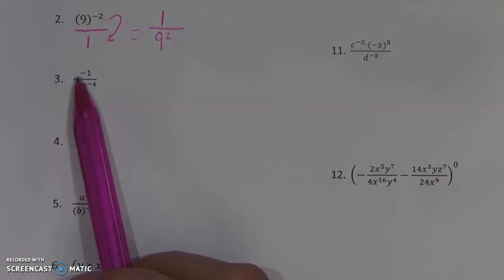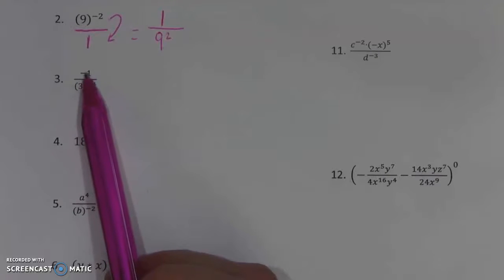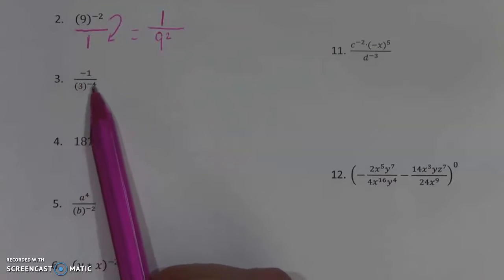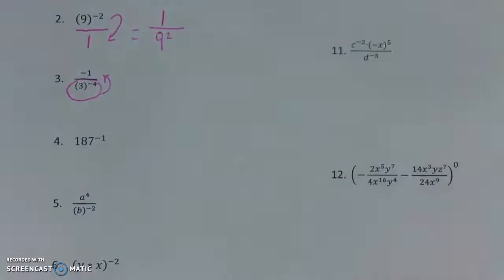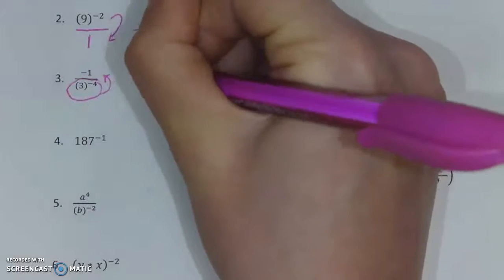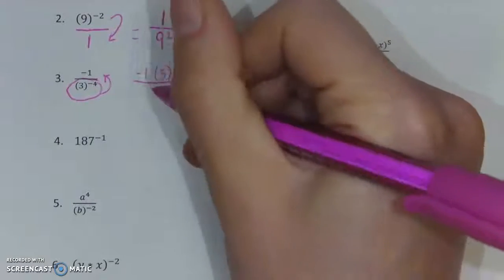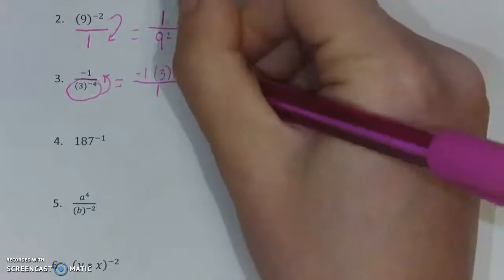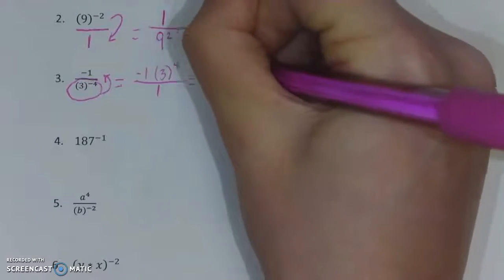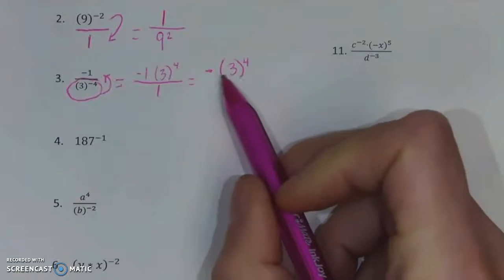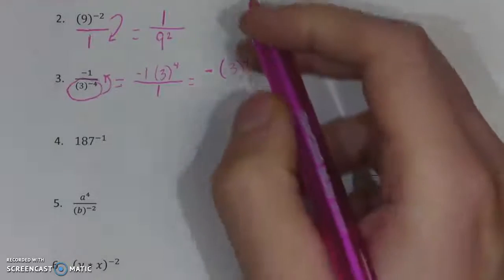Let's check our next one. Notice here we have a negative one — this isn't going to switch to the denominator because this is not an exponent. Looking at the exponents themselves, we have a negative four. That means it needs to move to the other part of the fraction. So what we really have is negative one times three to the fourth, where the exponent exchanged its negative. In the bottom, we are left with nothing, so we put a one down there. Anything divided by one is itself, so you can rewrite this as negative three to the fourth. Don't lose your negative. Keeping it as negative one times three to the fourth is also fine, but negative three to the fourth is the best way to write it with the fewest numbers.